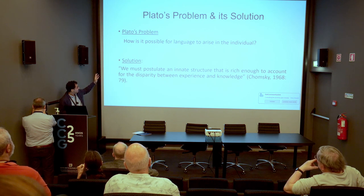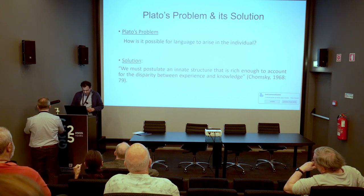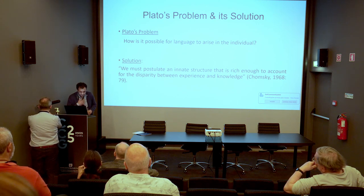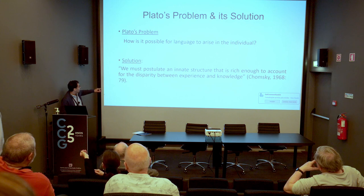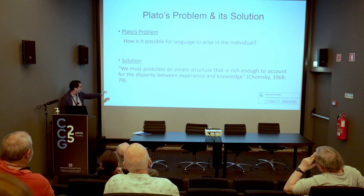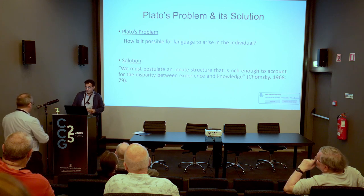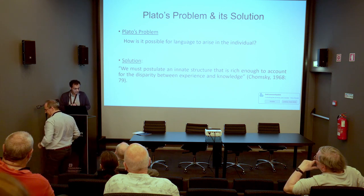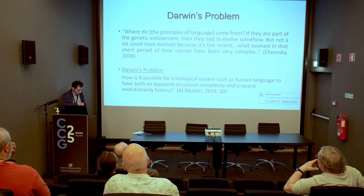How Chomsky formulated the problem of language acquisition, based on this and many other examples, is: how is it possible for language to arise in the individual? The solution, as Chomsky writes in 1979, is: 'We must postulate an innate structure that is rich enough to account for the disparity between experience and knowledge' — we have to have a genetic endowment that is rich enough to account for this.